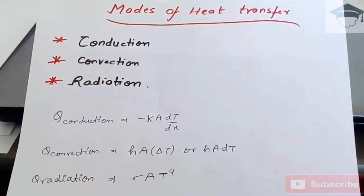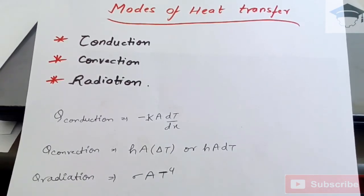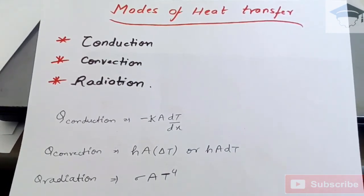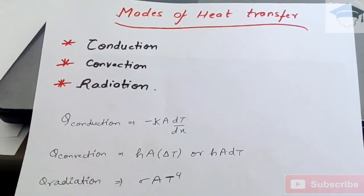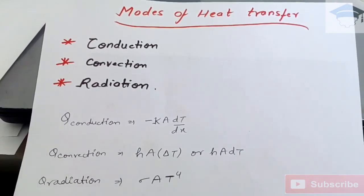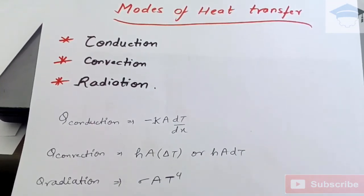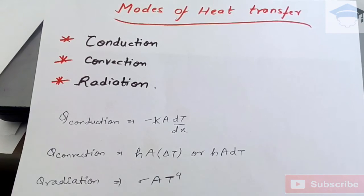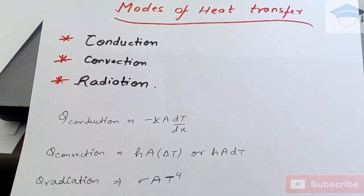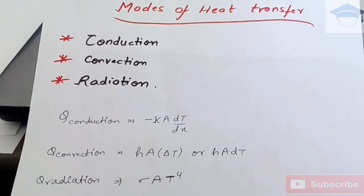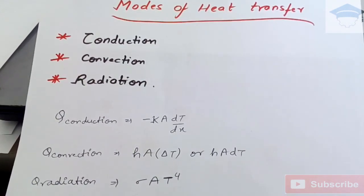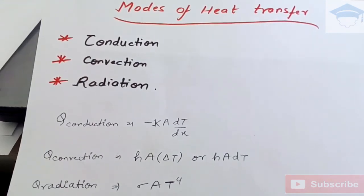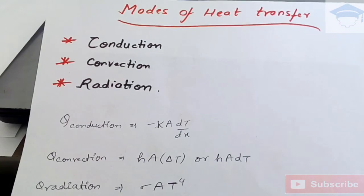Conduction, convection, and radiation all obey different laws. Now conduction law was given by Fourier, so heat transferred by conduction is given by minus k A dT/dx, where k is the thermal conductivity in watt per meter Kelvin, A is the cross-sectional area through which the heat is conducted, dT/dx is the temperature gradient where dT is the temperature change and dx is the length across which the heat flows.